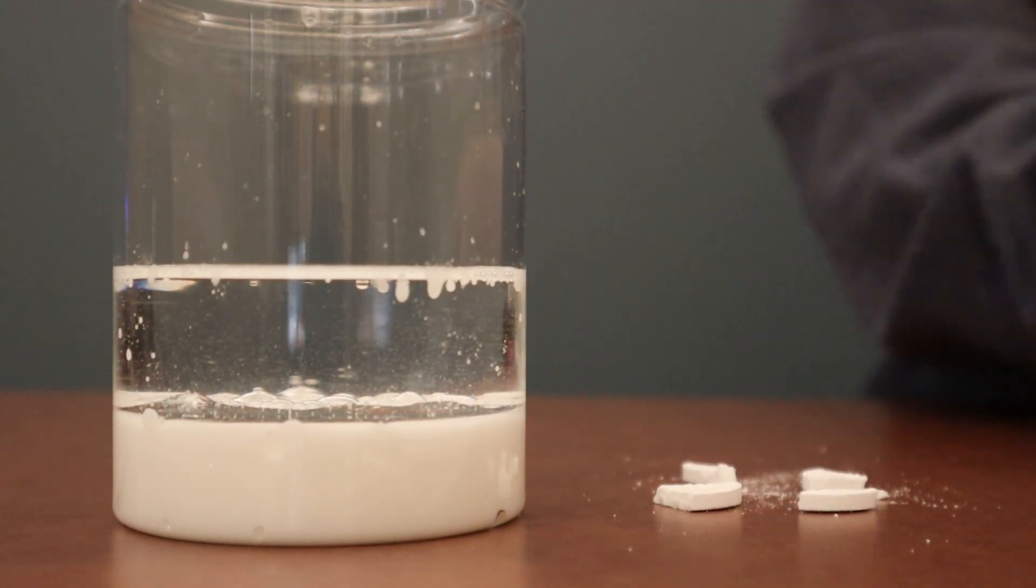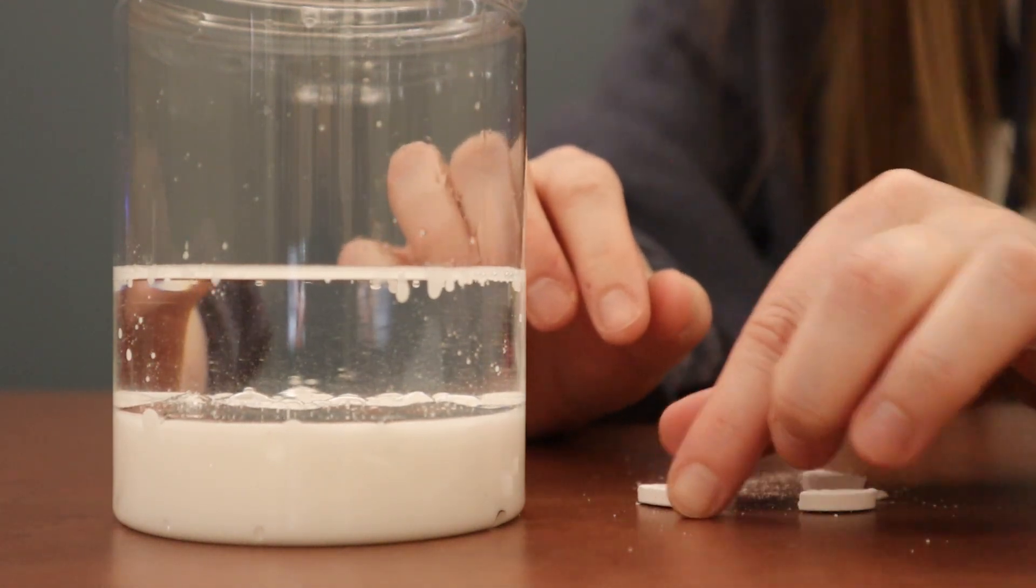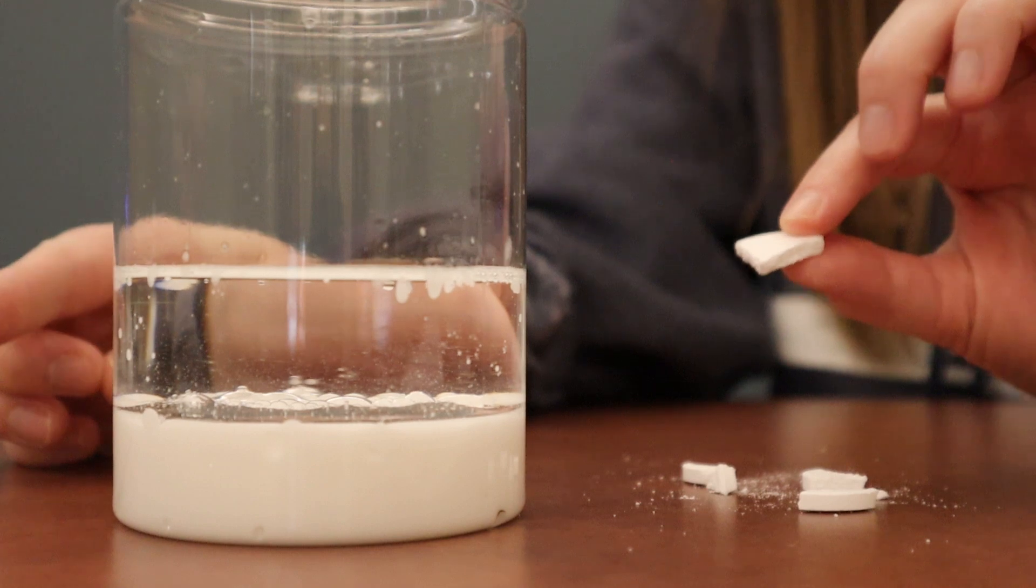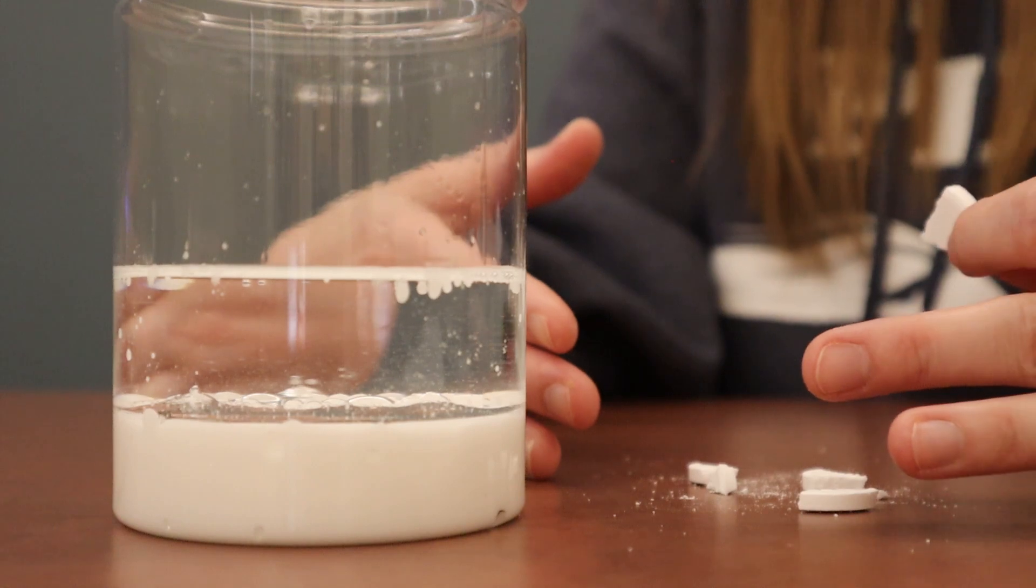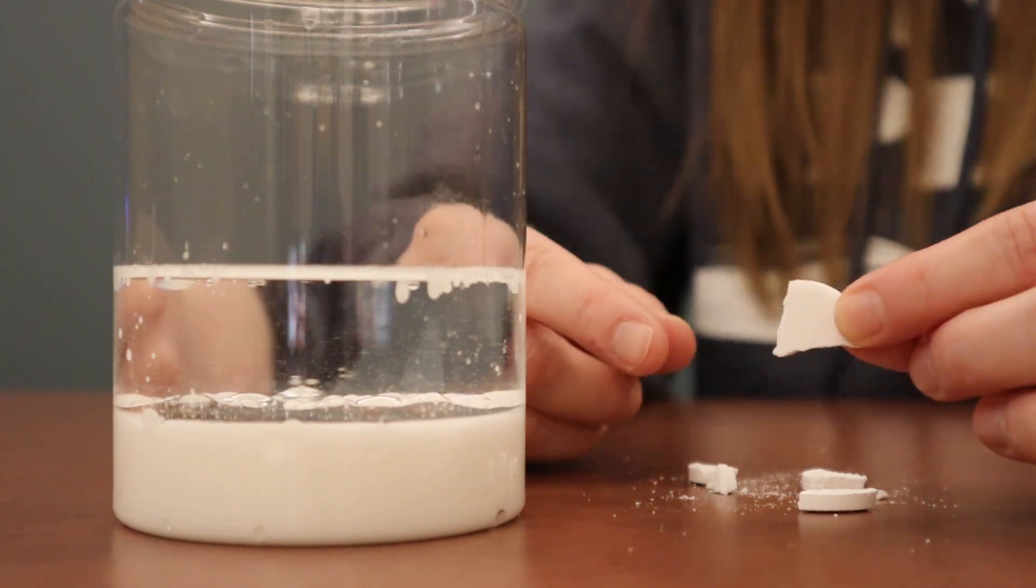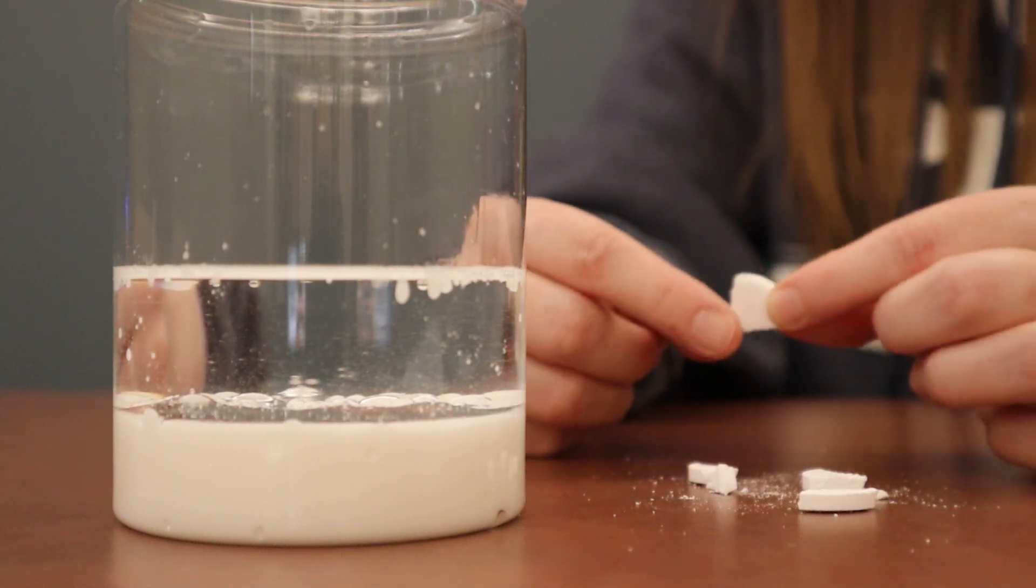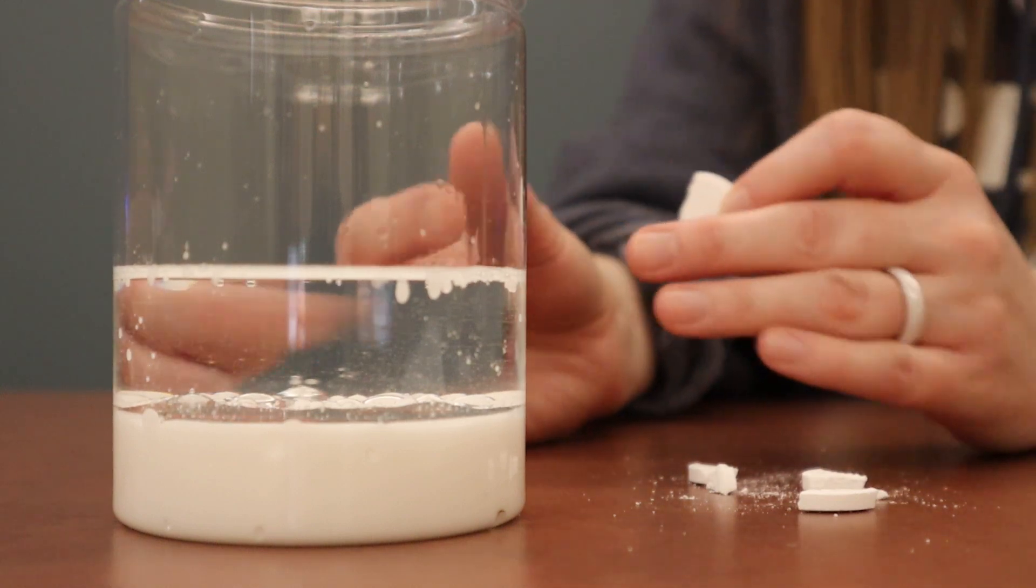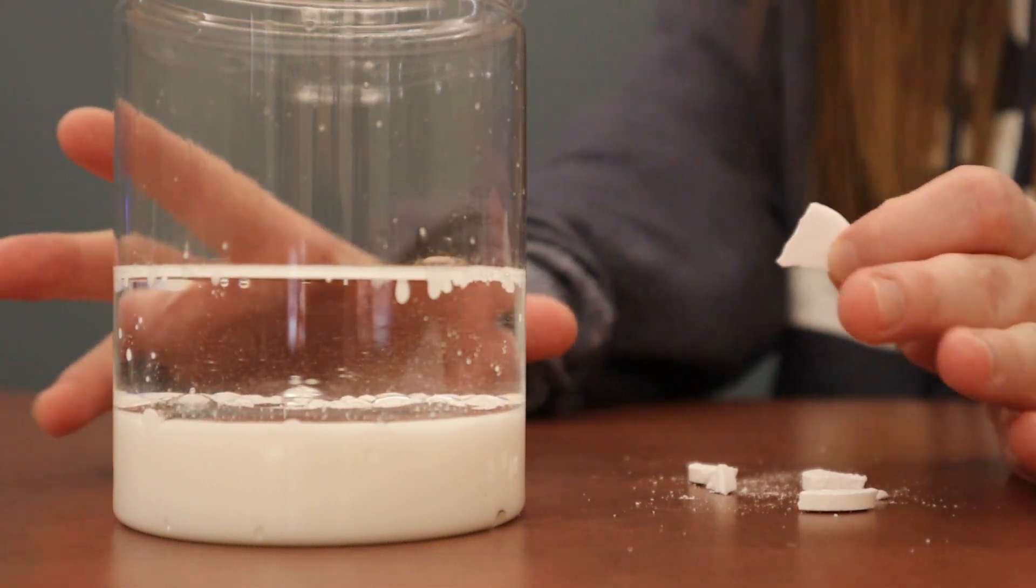And what you're going to see next is what's called a chemical reaction. Alka-Seltzer tablets contain two different ingredients that, once mixed with water, react to each other and form bubbles. And those two ingredients are called sodium bicarbonate and citric acid. So that's what's in this little white tablet that you have, that Alka-Seltzer tablet. And again, those two ingredients, once they're mixed with water, will react to one another and form a ton of little bubbles called carbon dioxide bubbles.